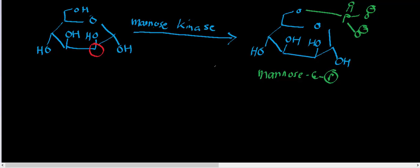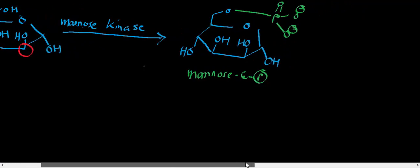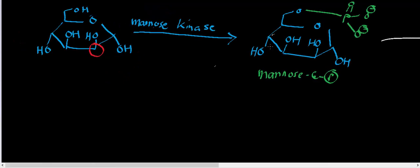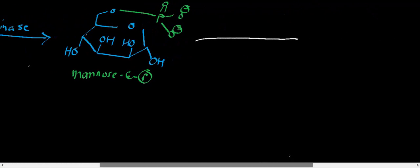And as we'll see in just a minute, mannose 6-phosphate is going to get consumed. Let me actually scroll over to the right to do this. Mannose 6-phosphate is going to be consumed by an enzyme very similar to phosphoglucoisomerase.